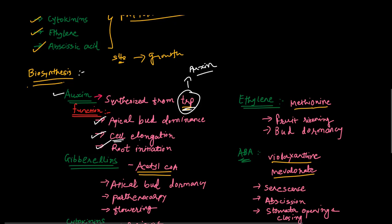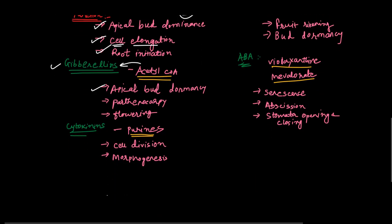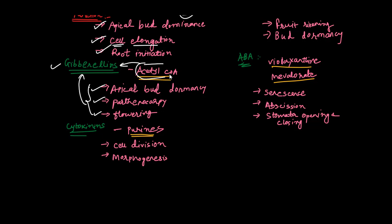The next hormone is gibberellin. Gibberellin is synthesized from acetyl-CoA, which is the precursor for gibberellin synthesis. The functions of gibberellin include breaking apical bud dormancy, promoting parthenocarpy, and flowering. These are the major functions of gibberellin.